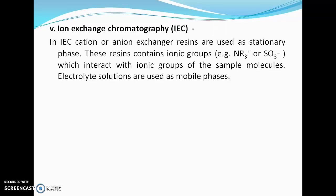Next is ion exchange chromatography. In ion exchange chromatography, cation or anion exchanger resins are used as the stationary phase. These resins contain ionic groups — cationic or anionic — which interact with the ionic groups of the sample molecule to achieve separation. Simple organic liquids like methanol and ethanol are not used as mobile phase; instead, electrolyte solutions are used. Ion exchange chromatography is used for separation of ionic species, proteins, or any ionized sample.